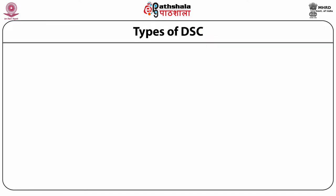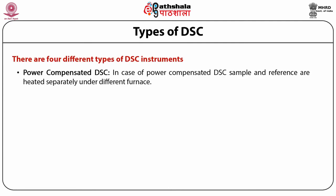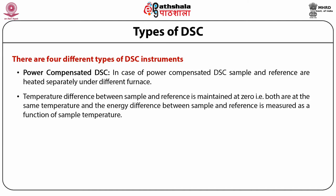Types of DSC: There are four different types of DSC instruments. The first one is power compensated DSC. In case of power compensated DSC, both reference and sample are heated separately under different furnaces. The difference of temperature between reference and sample is maintained at zero — that is, both are at the same temperature. The difference of energy between reference and sample is recorded as a function of sample temperature. Two independent heating units are employed for power compensation DSC.